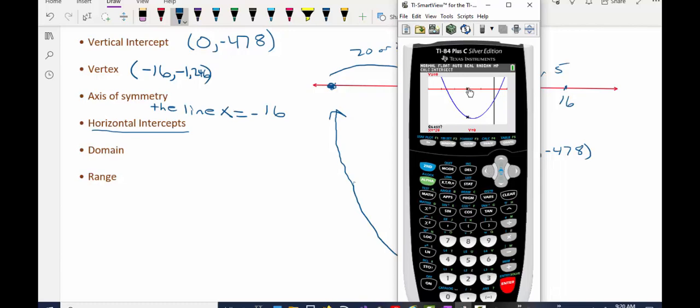If I just press enter, it'll find either the one on the left or the one on the right. It typically just finds the one that it's closest to. So I'm going to press enter.